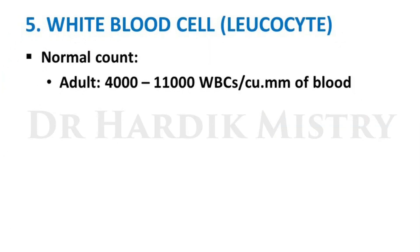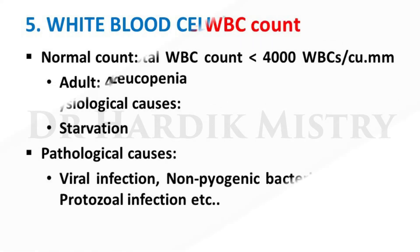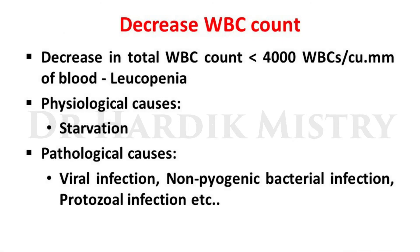White blood cell, also known as leukocyte. Normal count in adult: 4,000 to 11,000 WBCs per cubic mm of blood. Decrease in total WBC count below 4,000 WBCs per cubic mm — the condition is known as leukopenia. Physiological cause: starvation. Pathological causes include viral infection, non-pyogenic bacterial infection, and protozoal infection.